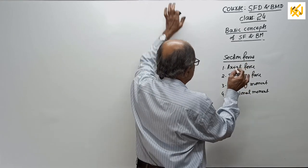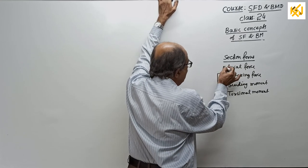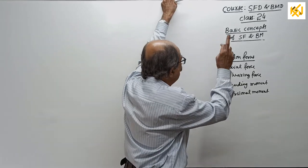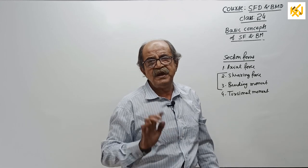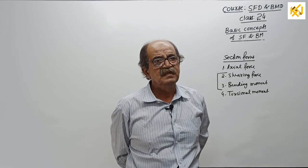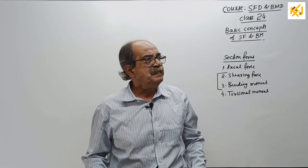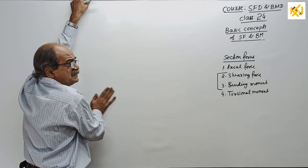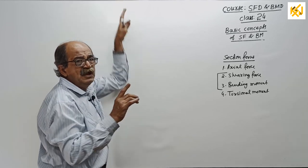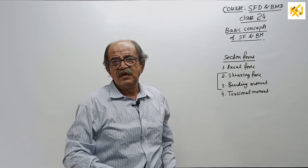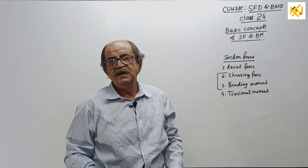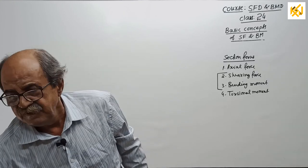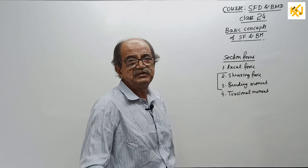Before you find section forces, the most important thing is to first ensure equilibrium — members should neither move nor rotate. We are discussing coplanar structures, that is beams. So equilibrium conditions are: sigma Fx = 0, sigma Fy = 0, and sigma M = 0. You can take moment about any point.